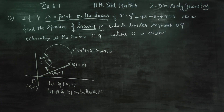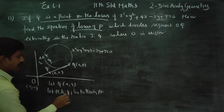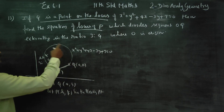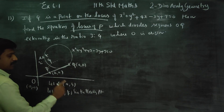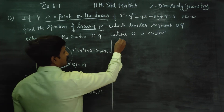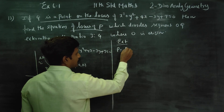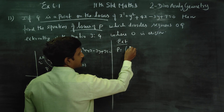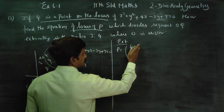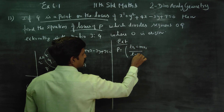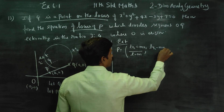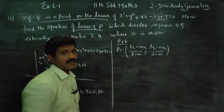Q is (a, b) — that is the curve point. H and K is the moving point P. For 10th standard, this is the external division concept. We will form the external division formula: lx2 minus mx1 by l minus m, and ly2 minus my1 by l minus m.